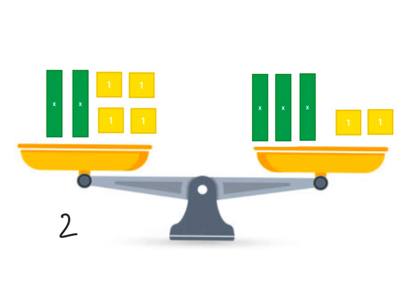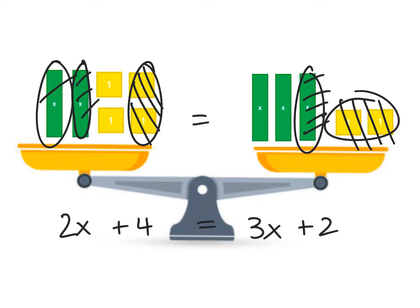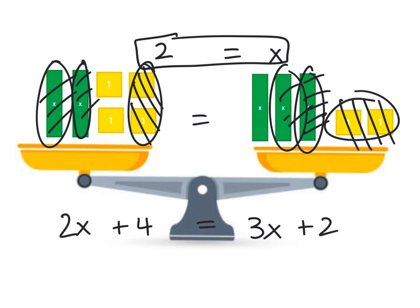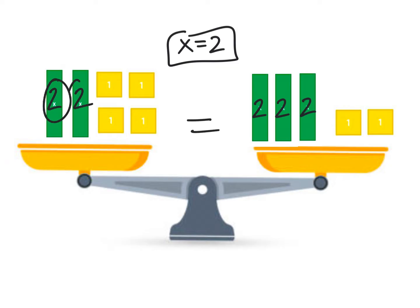Let's try another one. On my scale I see 2x plus 4 on one side, and 3x plus 2 on the other — they are balanced. Take away what they both have in common: remove two 1s from both sides, then remove two Xs from both sides. All I'm left with is X equals 2. To check: plugging in 2 for each X gives 8 on both sides. Those two sides are balanced, so X equals 2 is correct.